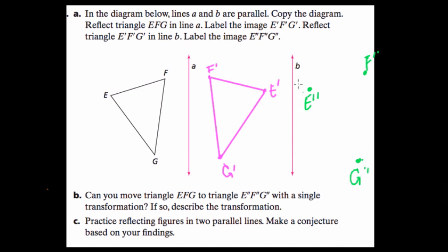So if I connect my lines here, we can see what they're getting at in this problem. Essentially what happened was by reflecting this shape twice over two parallel lines, we went back to our original shape. And the question they ask is, can you have done this with a single transformation?